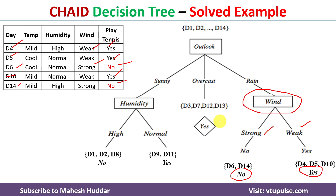This is the final decision tree, since we have leaf nodes for all branches. This is the procedure to build a decision tree using the CHAID algorithm. If you like the video, please like and share with your friends, press the subscribe button for more videos, and press the bell icon for regular updates. Thank you for watching.